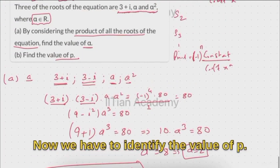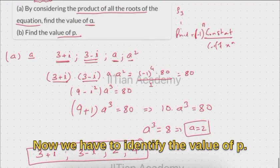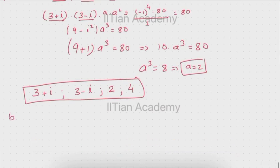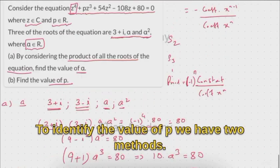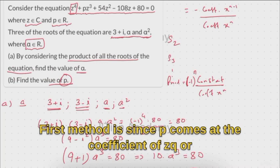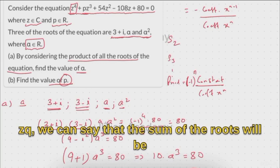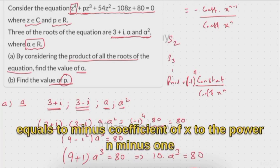Now we have to identify the value of p. We have two methods. The first method is that since p is the coefficient of z cubed, we can use the fact that the sum of roots equals minus times the coefficient of x to the power n minus 1 divided by the coefficient of x to the power n.